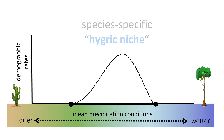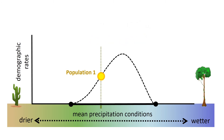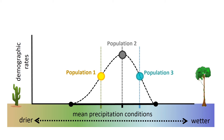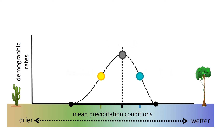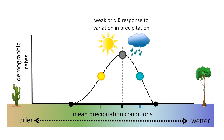Across the range of the species, different populations are located in different parts of that Hygric Niche. Paralleling individual performance curves, population-level demographic rates are expected to peak in central regions of the niche. Different populations of the same species should then respond in different ways to temporal variation in local rainfall. In the middle of that niche, both rainier-than-average and drier-than-average conditions represent those where populations can thrive.